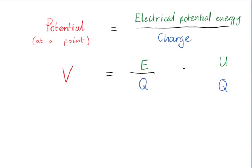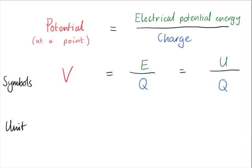V equals E or U — meaning electrical potential energy — divided by Q. What is the unit in which we measure potential? Energy is measured in joules (J). Charge is measured in coulombs (C). So potential is measured in joules per coulomb. A joule per coulomb is also called a volt (V).